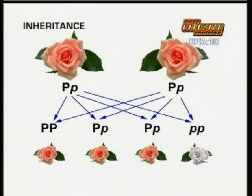Dominant and recessive characteristics always occur in this three to one ratio when hybrids are crossed.